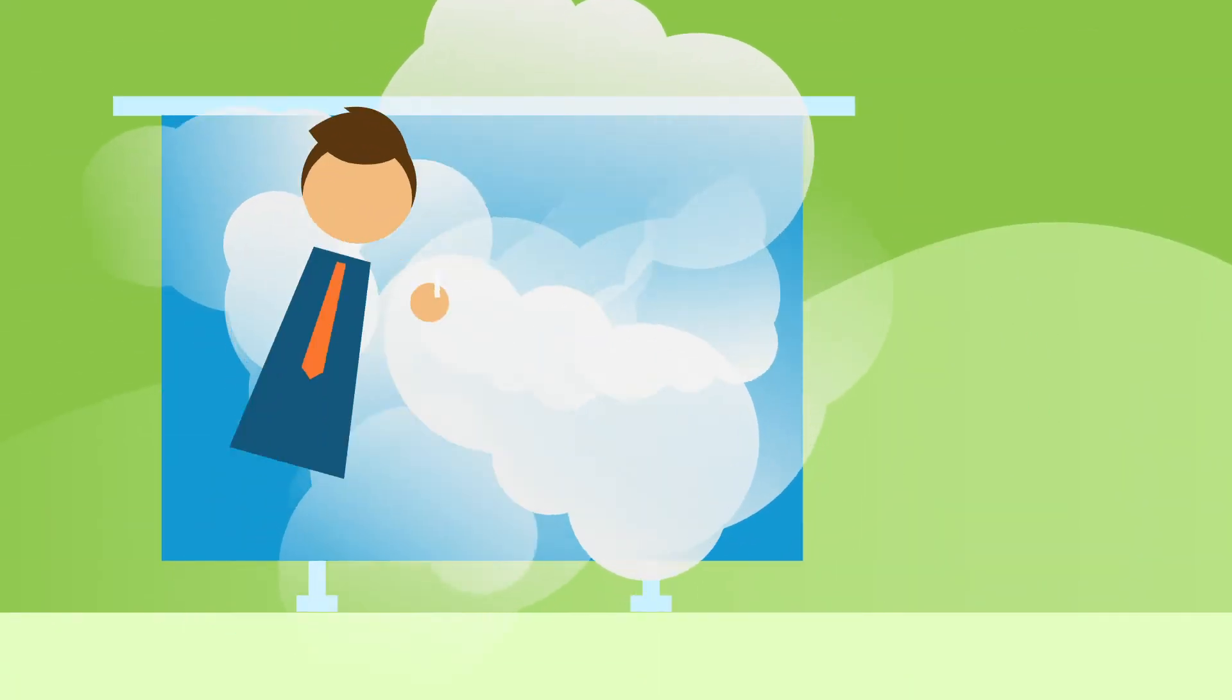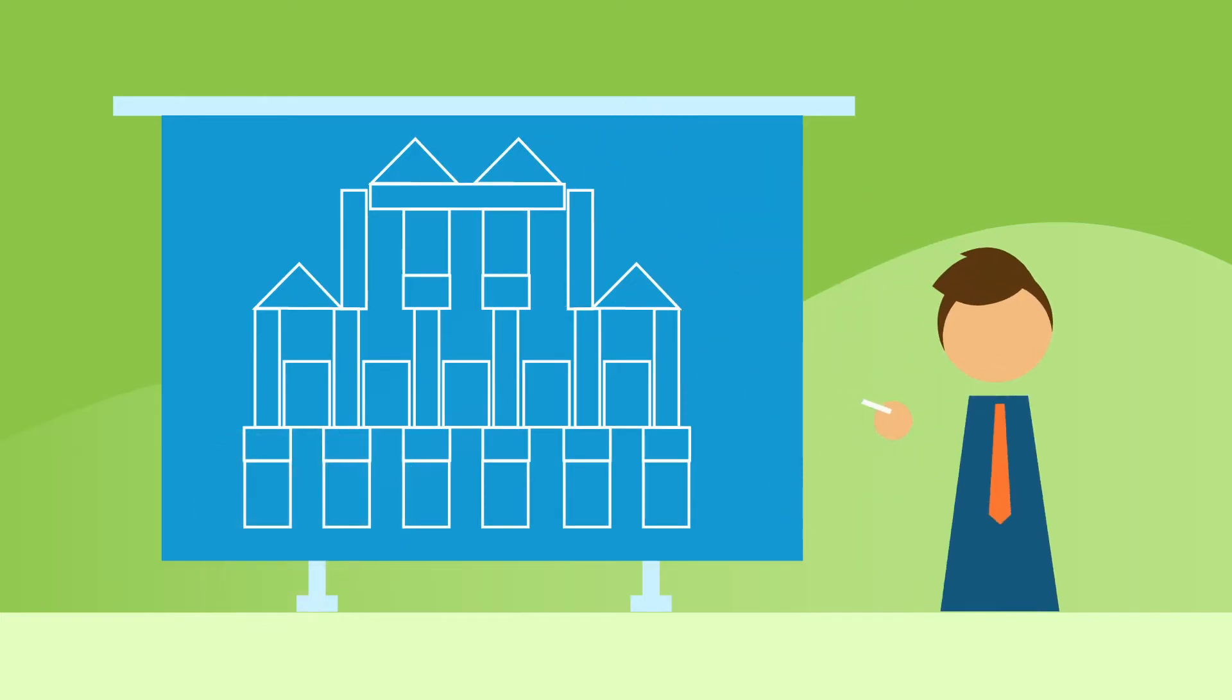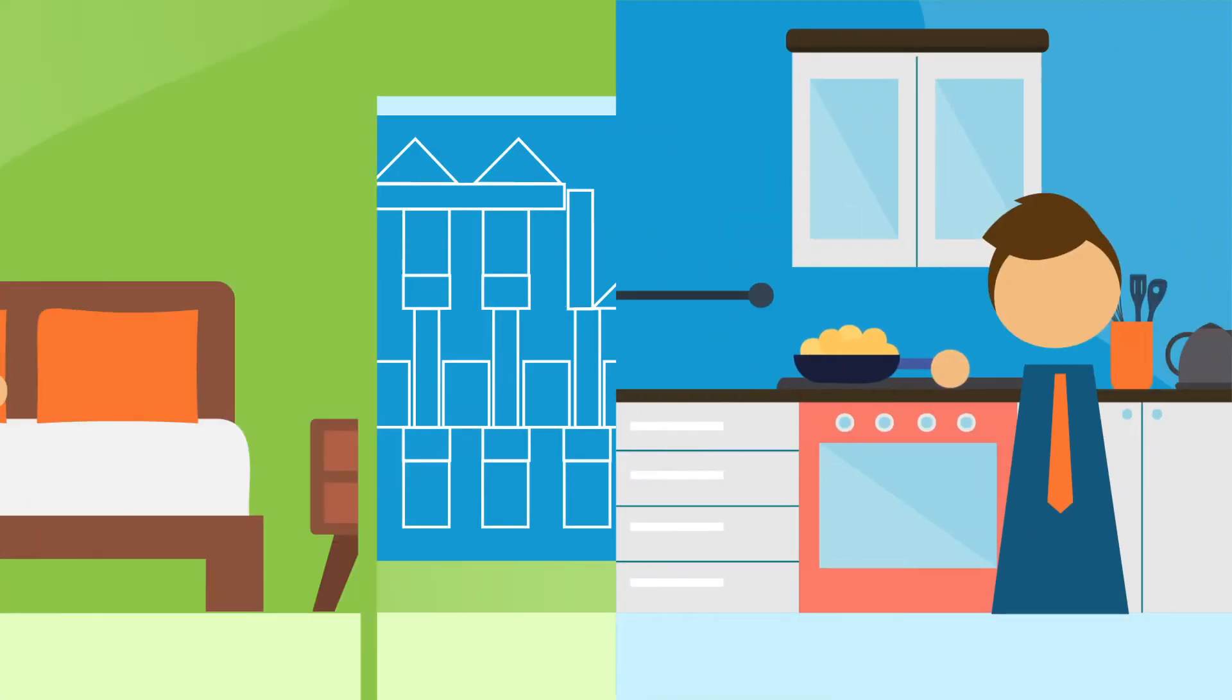So instead, you start out with a draft or concept and plan out the ideal version of your apartment and its facilities, like kitchen and bedroom.